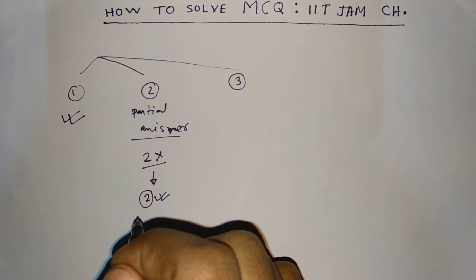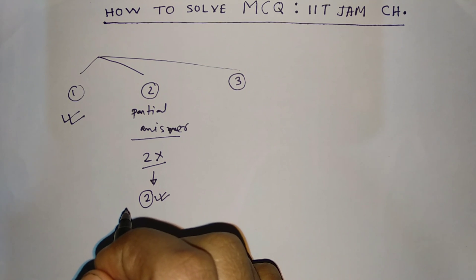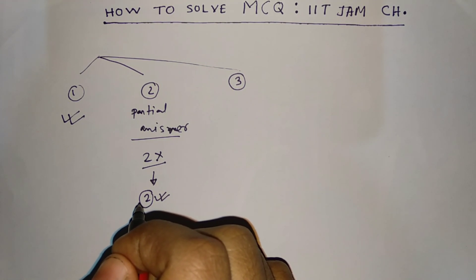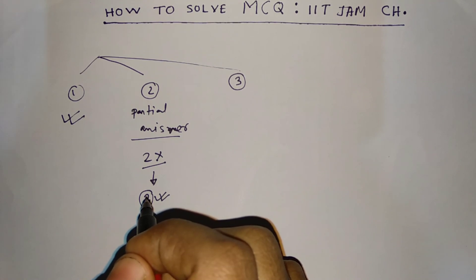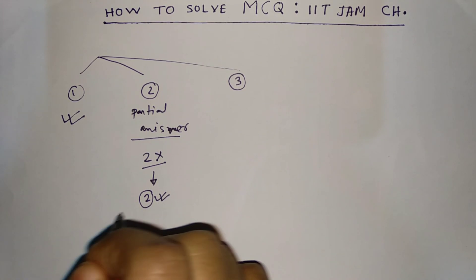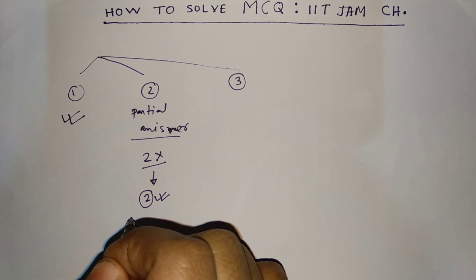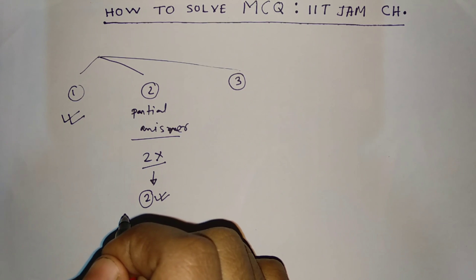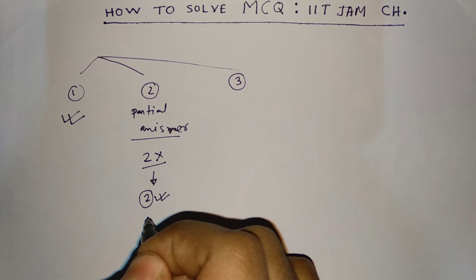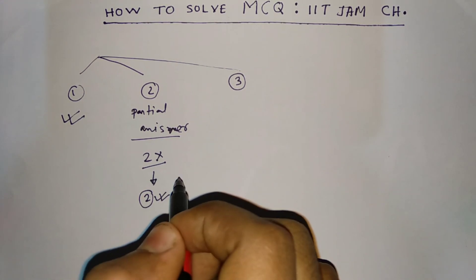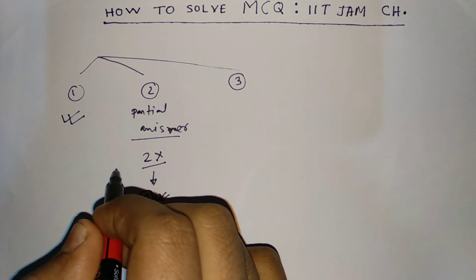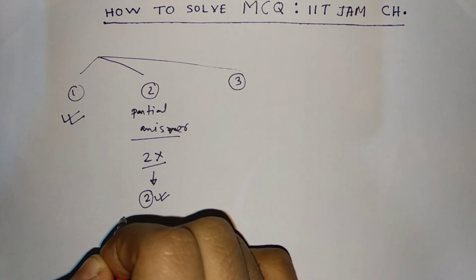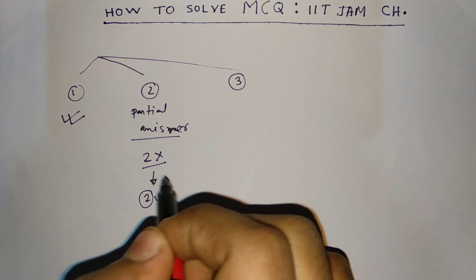I am telling you this because most of the time it happens that if you answer some questions you're not sure about, your luck may not be good enough and you may get negative marks. Whatever marks you gain from other questions, those marks will be deducted. So don't do that. If you are not sure, don't guess. You can apply other tricks so that you get the correct answer, but never guess and apply it as a correct answer.